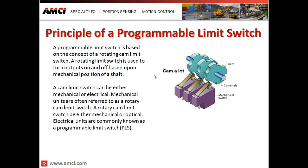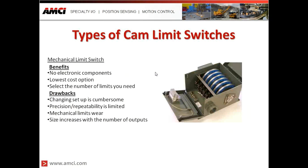A programmable limit switch is based on the concept of a rotating cam limit switch, similar to what you would see in your car. A rotating limit switch is used to turn outputs on and off based upon the mechanical position of a shaft. A cam limit switch can be either mechanical or electrical. Mechanical units are often referred to as rotary cam limit switches, which can be either mechanical or optical. Electrical units are commonly known as programmable limit switches, or PLS.